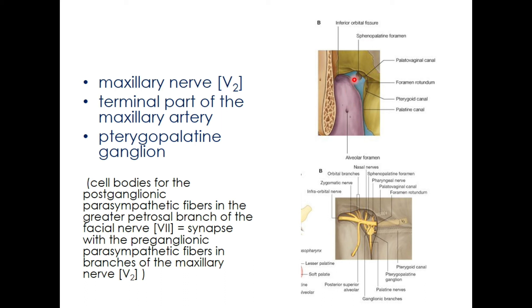The pterygopalatine fossa communicates with different cavities of the skull through various foramina and fissures. Through the inferior orbital fissure it communicates with the orbital cavity; the sphenopalatine foramen, pterygovaginal canal, and foramen rotundum connect it with the cranial cavity; the palatine canal and pterygoid canal are also present; and the alveolar foramen connects it with the oral cavity.